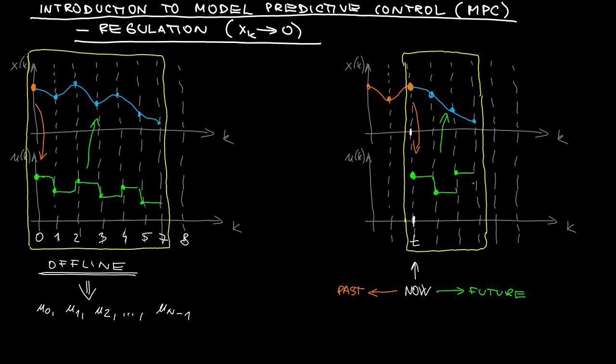But now comes the crucial trick. After doing this computation, we are discarding it all. Well, not all, but almost all. We only keep the first sample here, which is the control that I need to send to the actuators right now.